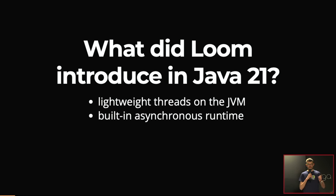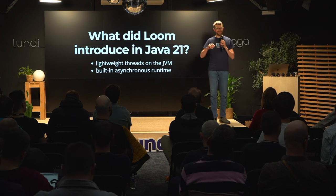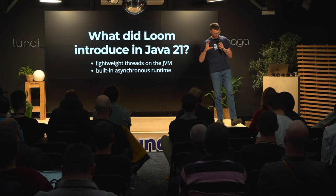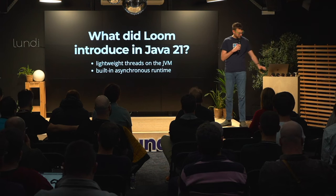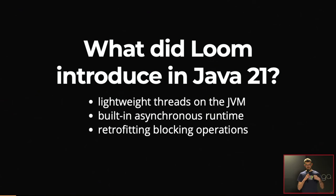The second thing Project Loom introduced is a built-in asynchronous runtime. Java now manages an internal thread pool of old-style platform or OS-level threads, and on this limited pool, an arbitrary number of virtual threads are scheduled. This is the same thing that Cats Effect and ZIO runtimes are doing — those libraries do it at the library level, but here we have it at the JVM level. So we can now use a different syntax to leverage these threads.